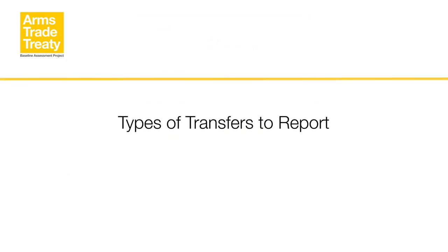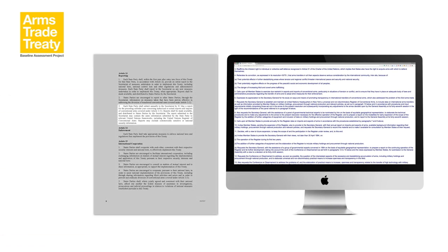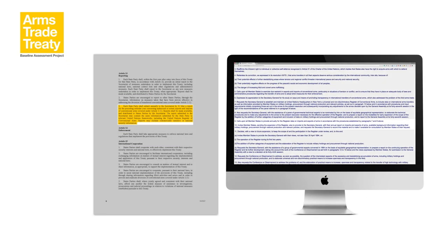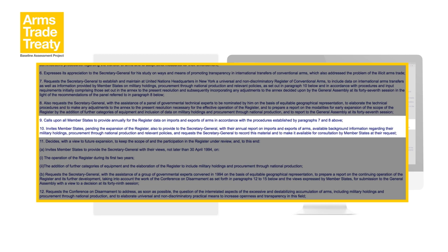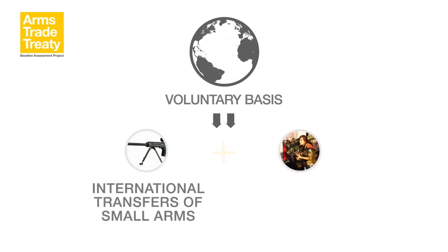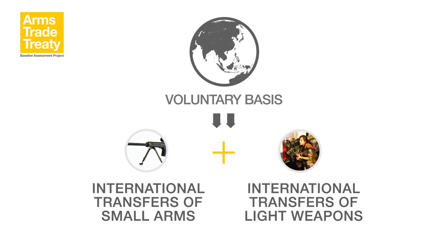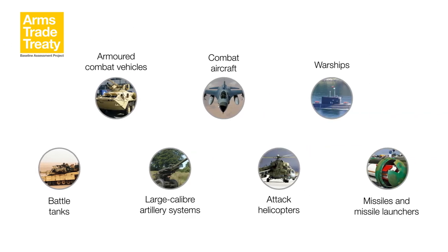Types of transfers to report: The Arms Trade Treaty requires states' parties to report on authorizations and/or actual exports and imports of conventional arms covered under Article 2, Paragraph 1. Similarly, United Nations Resolution 46/36L calls on UN member states to provide annually information on the number of items in seven categories of conventional arms imported into or exported from their territory in the previous calendar year. The resolution also invites states to provide background information on their military holdings, procurement through national production, and other relevant policies. Since 2004, states have also been invited to provide information on international transfers of small arms and light weapons. Although the ATT regulates imports, exports, transit or transshipment, and brokering of conventional arms, the treaty only requires states' parties to submit annual reports on authorizations and/or actual exports and imports of the eight categories of conventional arms covered by the treaty.